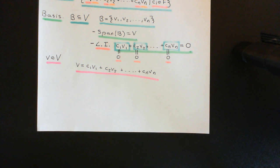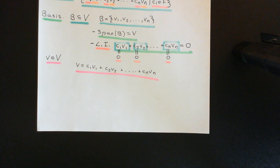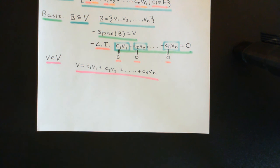We will have a break here, and then in the next video we will prove that for a finite dimensional vector space, you can always construct a basis — a basis which will have a finite number of elements in it.